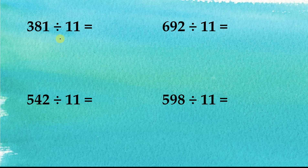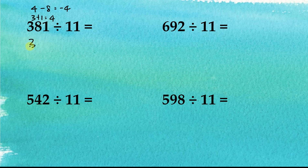Next: 381 divided by 11. The sum of the odd digits — 3 plus 1 — equals 4. And 4 minus 8 equals negative 4. To make the difference 0, we need to add 4 to this number to make it 385. Then we subtract 4, so 385 minus 4 is still equal to 381, divided by 11.